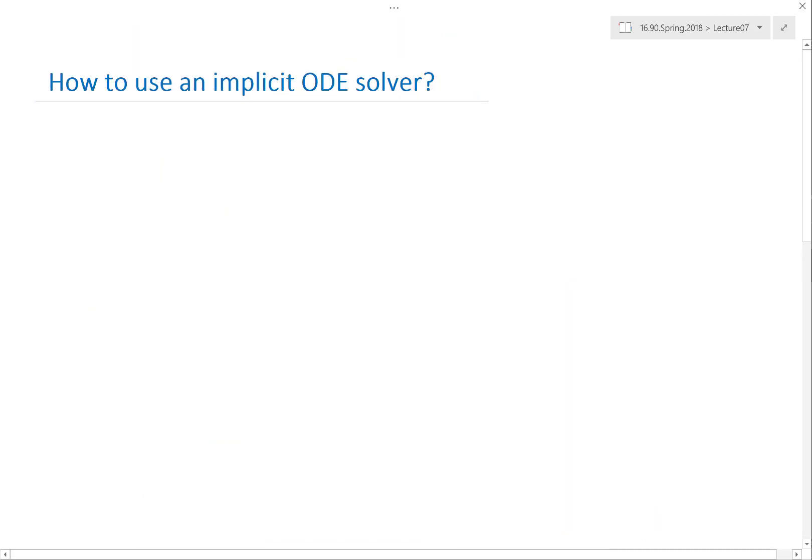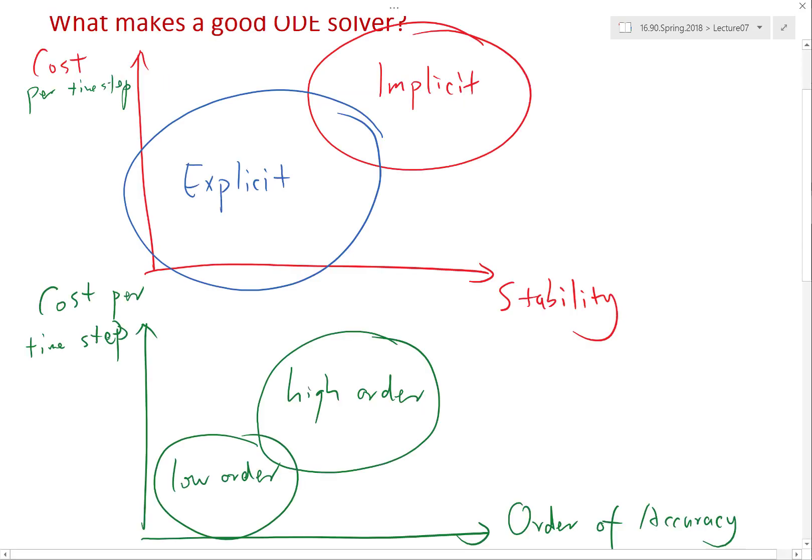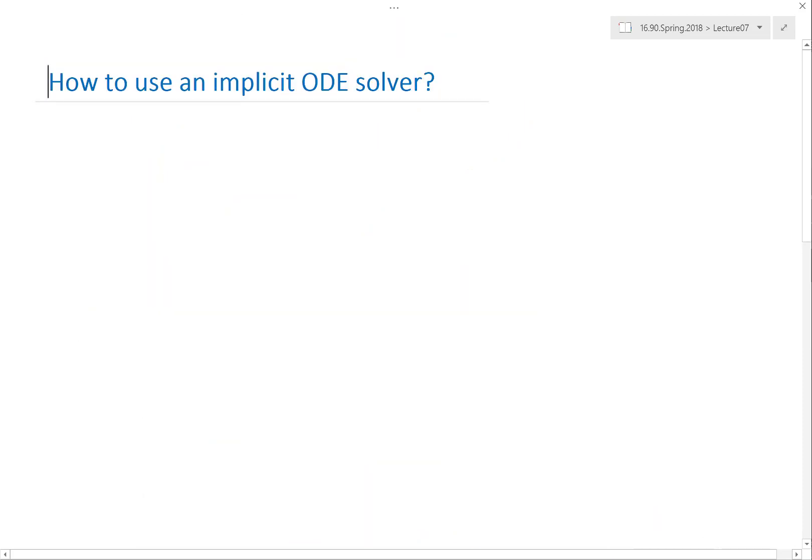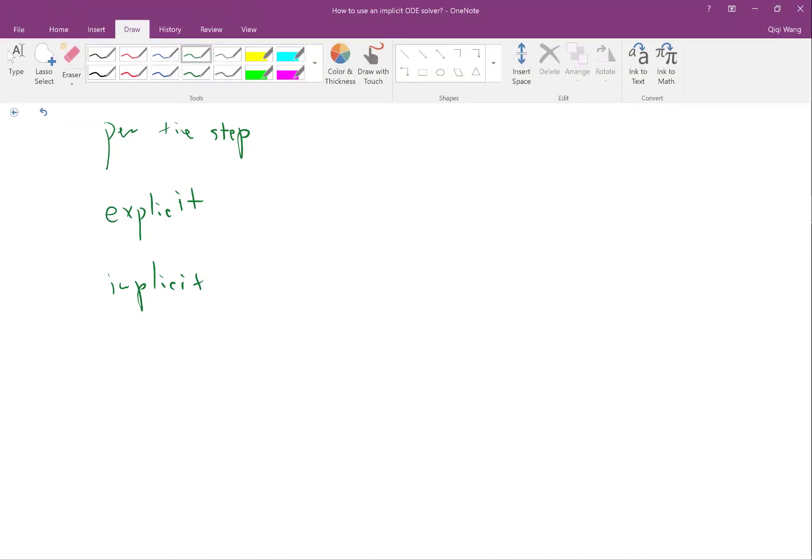Alright, so first of all let's review the trade-off between explicit and implicit solvers. For explicit solvers, per time step, you just have to compute a formula.